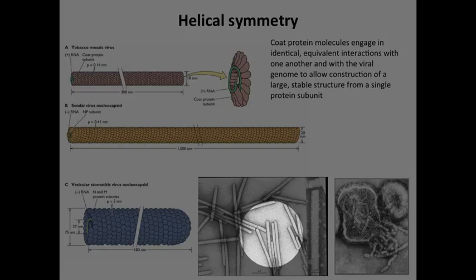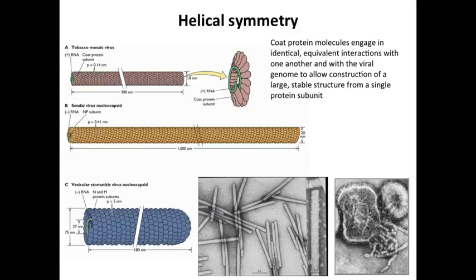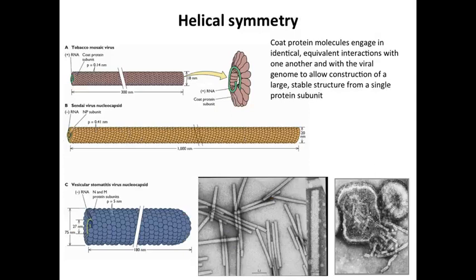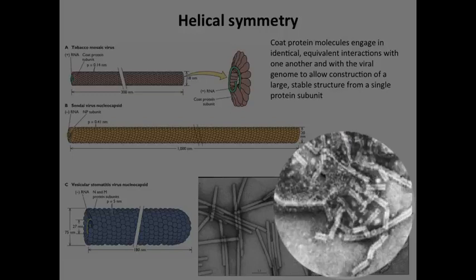Here's an EM of tobacco mosaic virus — naked RNA with protein twisted around it, and that's how they infect plants. Animal viruses also have helical structures. Sendai virus, a paramyxovirus related to measles, has a nucleocapsid made of a single protein that interacts with itself and with the RNA — a bit longer than the TMV capsid. Both are called nucleocapsids because of the RNA-protein interaction.